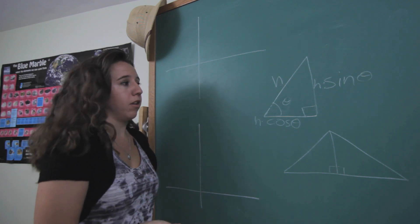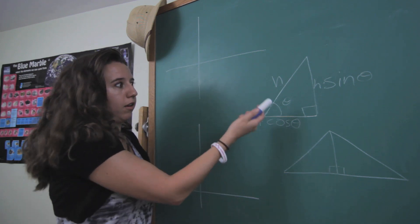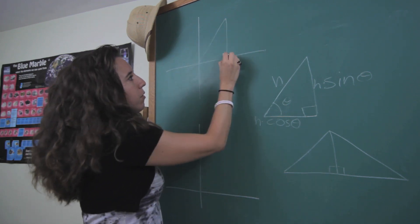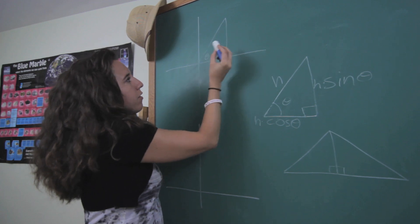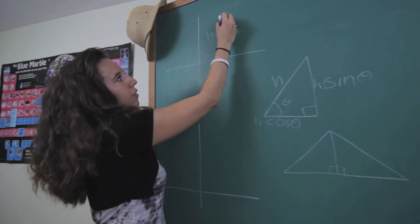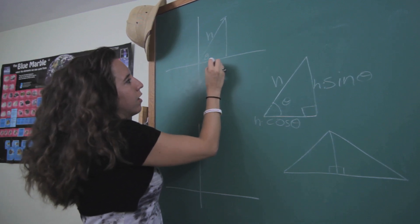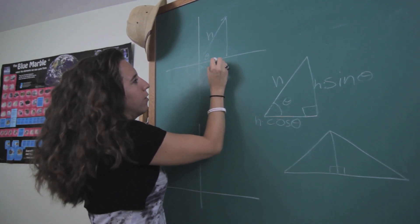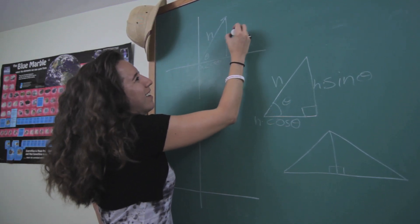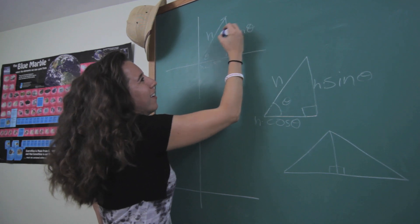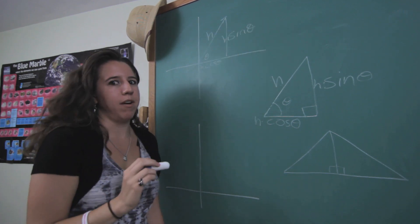So the first triangle we're going to look at is actually going to look exactly like this one. It's our most general case. Here's our theta and our H. And just for fun we'll pretend it's a vector. And then once again we've got H cosine theta and H sine theta. And you can write them in whatever order you like.